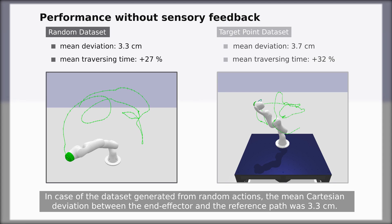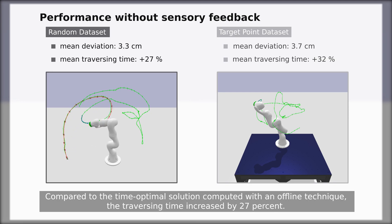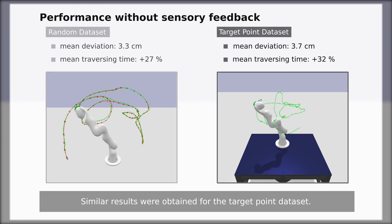In case of the dataset generated from random actions, the mean Cartesian deviation between the end-effector and the reference path was 3.3 cm. Compared to the time-optimal solution computed with an offline technique, the traversing time increased by 27%. Similar results were obtained for the target-point dataset.